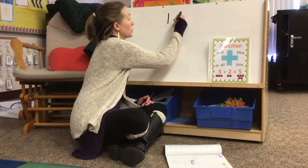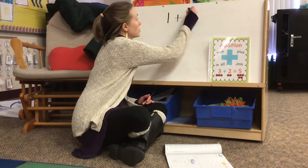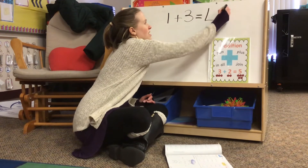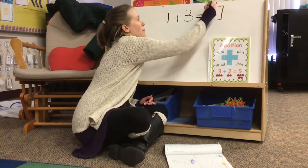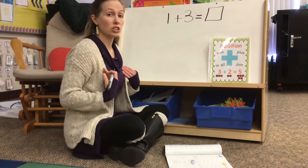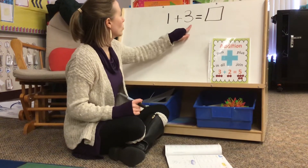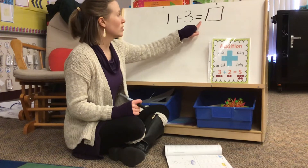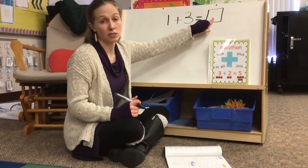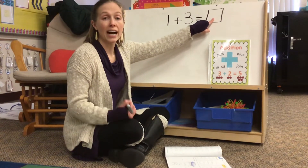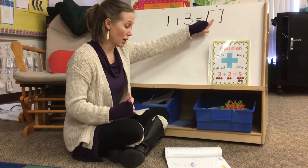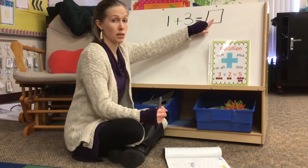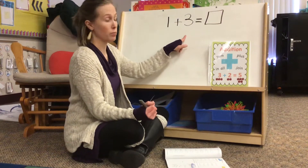The equation looks like this: one plus three equals, and then there's an empty box. It's my job to figure out what one plus three is equal to — I need to figure out what number goes there. I can use a blank sheet of paper or draw right in my book to help me. Let me show you using this whiteboard.